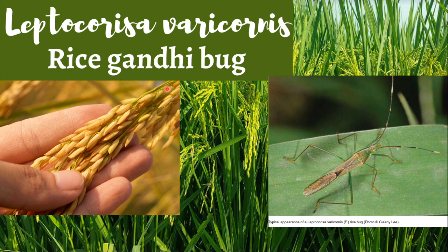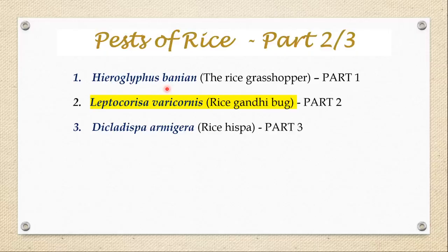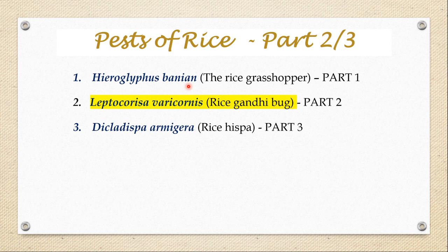Hello and welcome to my class. In this video I am going to discuss the biology of Leptocoryza variconis, which is commonly known as rice gandhi bug. This insect is a very serious pest of rice in the eastern states of India as well as in Bangladesh. This video is the second part of the series on pests of rice. In the first part I discussed the biology of Hieroglyphus banyan, or the rice grasshopper. You can find the link in the description box. In the third part I am going to talk about Dikladispa armijera, or rice hispa.